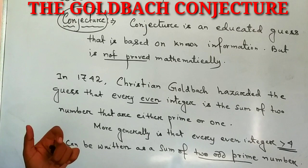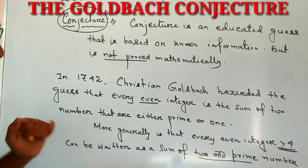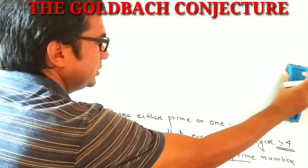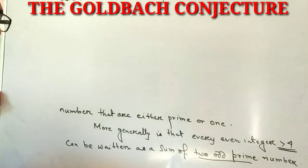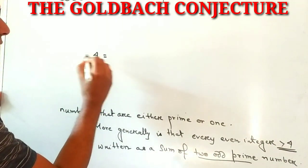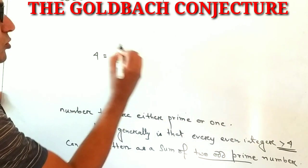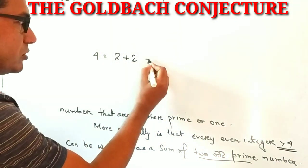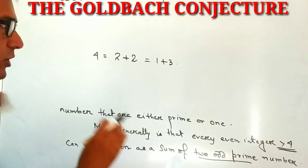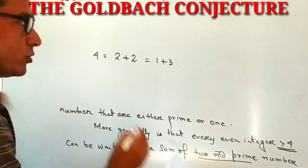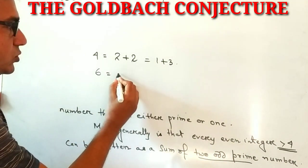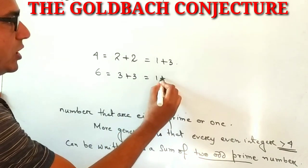Now we take some examples to understand the conjecture. If we take the even integer four, then we get its representation as two plus two — both prime — or one plus three, where three is prime and one is one. And if we take the even integer greater than four, that is six, then six equals three plus three, or one plus five.